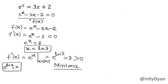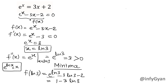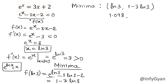Now let us find out the function value at this minima point. f at x equal to ln 3 will be e raised to the power ln 3 minus 3 ln 3 minus 2. That gives us 3 minus 3 ln 3 minus 2, which simplifies to 1 minus 3 ln 3. So the minima is at the point (ln 3, 1 minus 3 ln 3). Since ln 3 is approximately 1.098, the value comes out to approximately minus 2.294. So our minima is (1.098, −2.294).